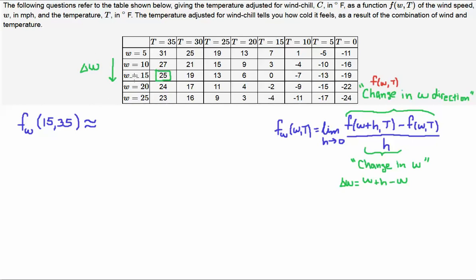Now, I highlighted here the point where w is 15 and t is 35 right here. So that is what f of 15,35 looks like, but not the partial of 15,35. So let's put this definition to work.